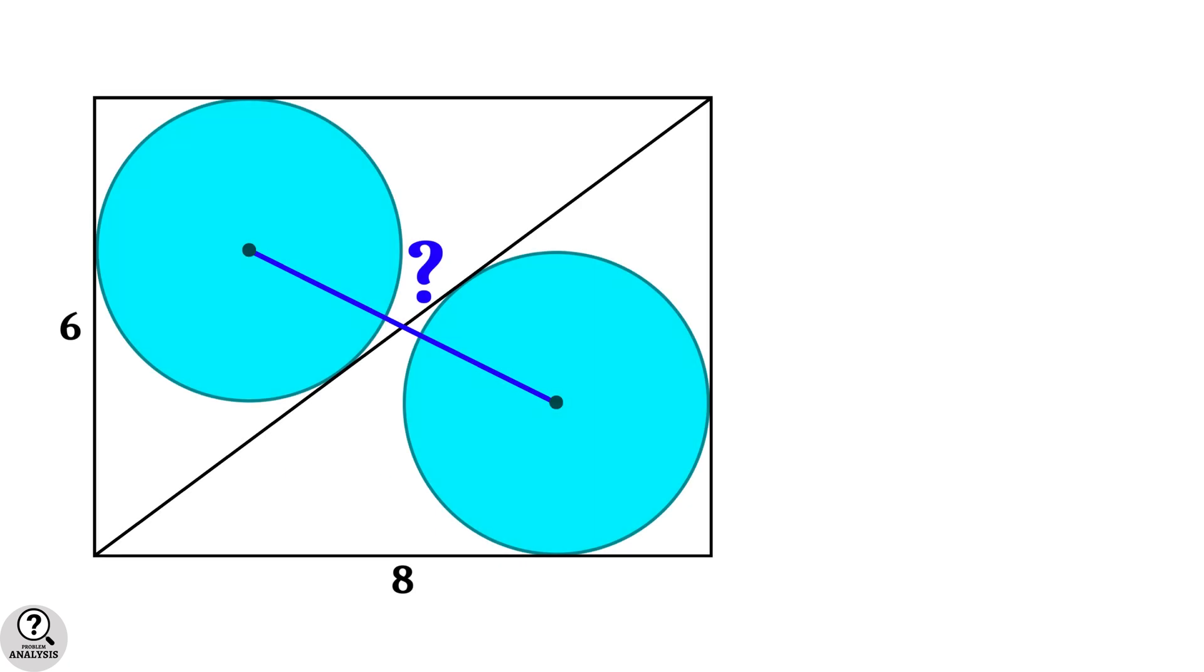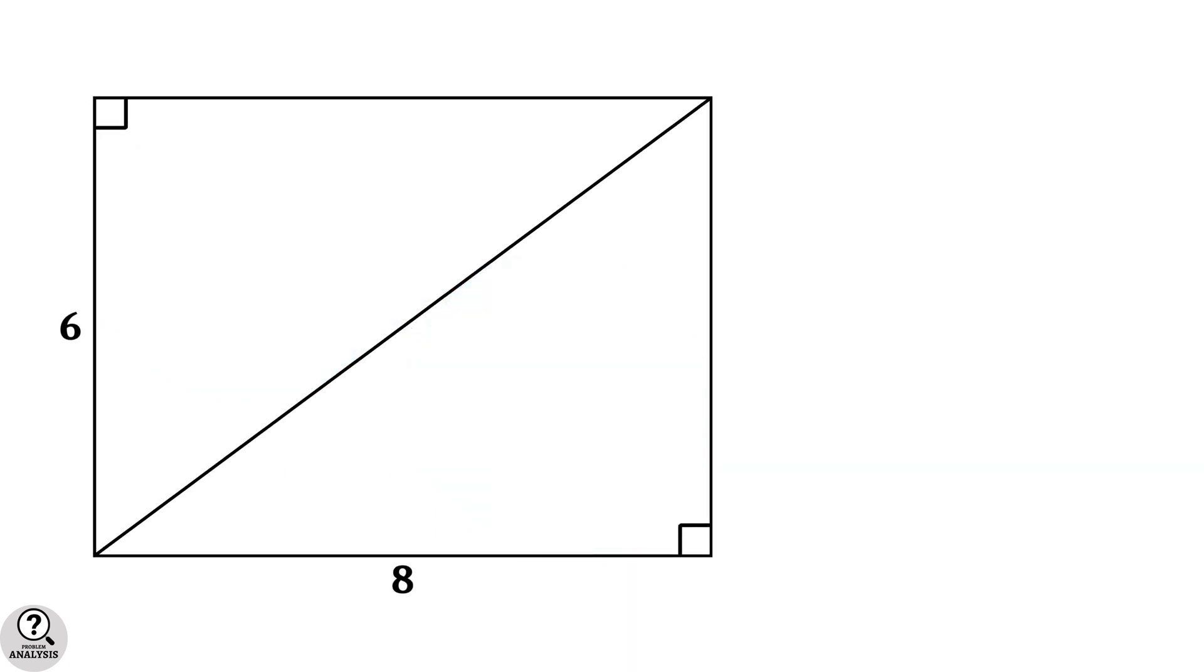Now observe the diagram and consider the diagonal of the rectangle. By the Pythagorean theorem, the diagonal length is √(6² + 8²) = √(36 + 64) = √100 = 10 units.